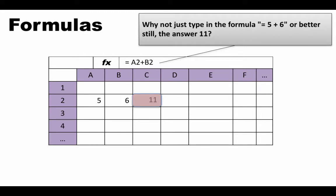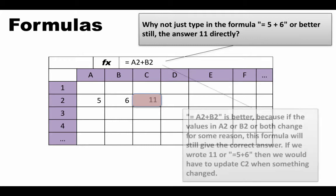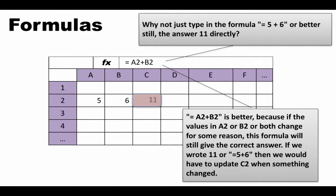Now comes a very important question. Instead of typing '=A2+B2' in cell C2, why not just type '=5+6' or even just the correct answer 11? We really have three options: '=A2+B2', '=5+6', or simply typing 11. Think about which one makes more sense. Well, '=A2+B2' is better — because when you write a formula referencing cell addresses, you will get the correct result even if the values in cells A2 or B2 change.